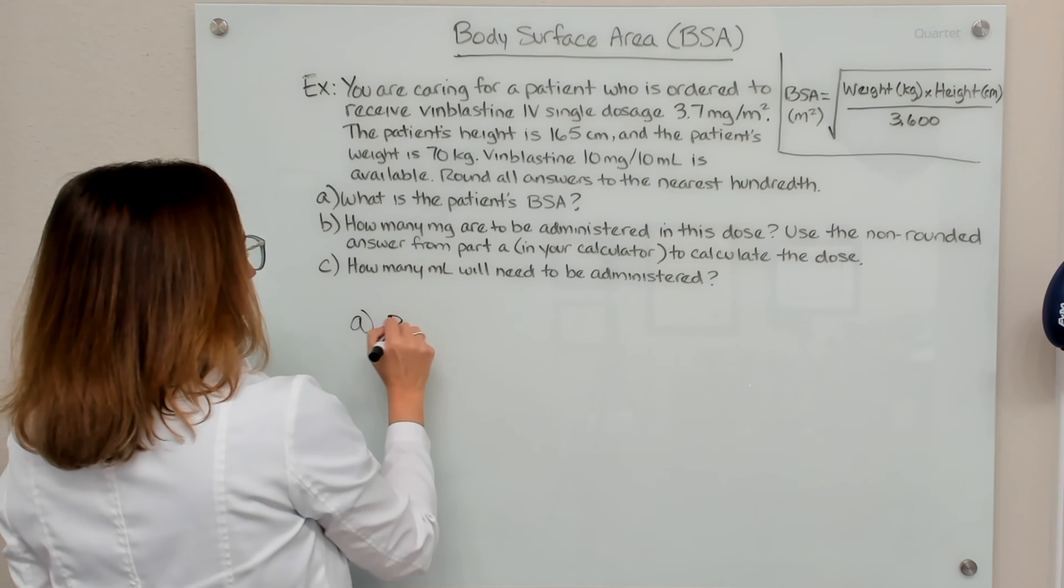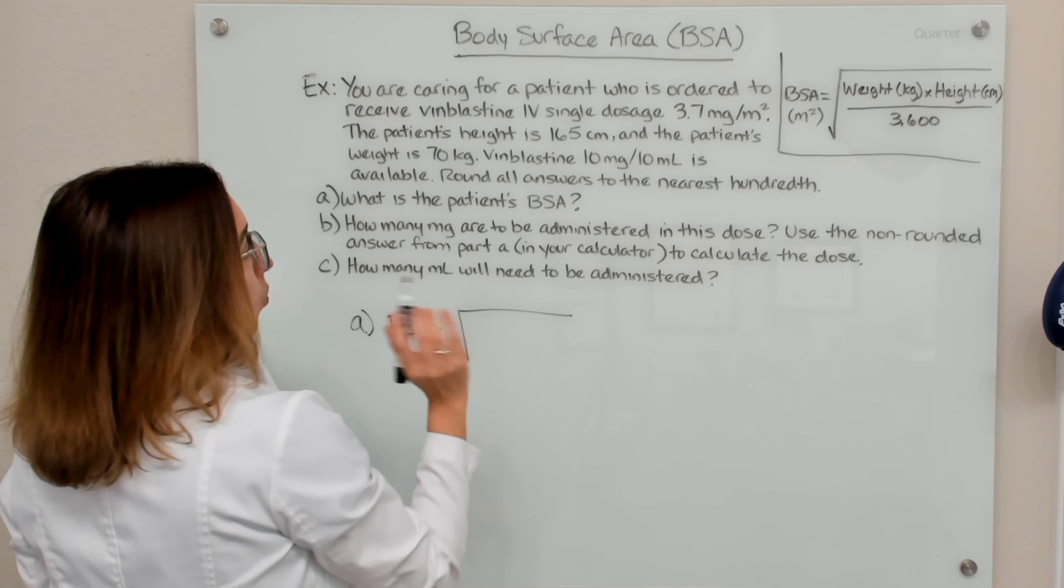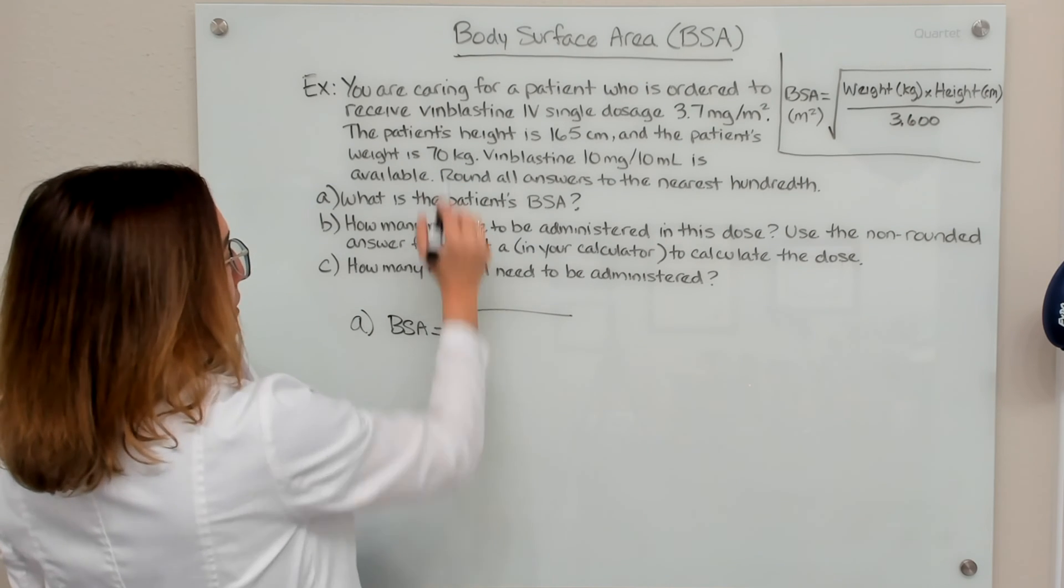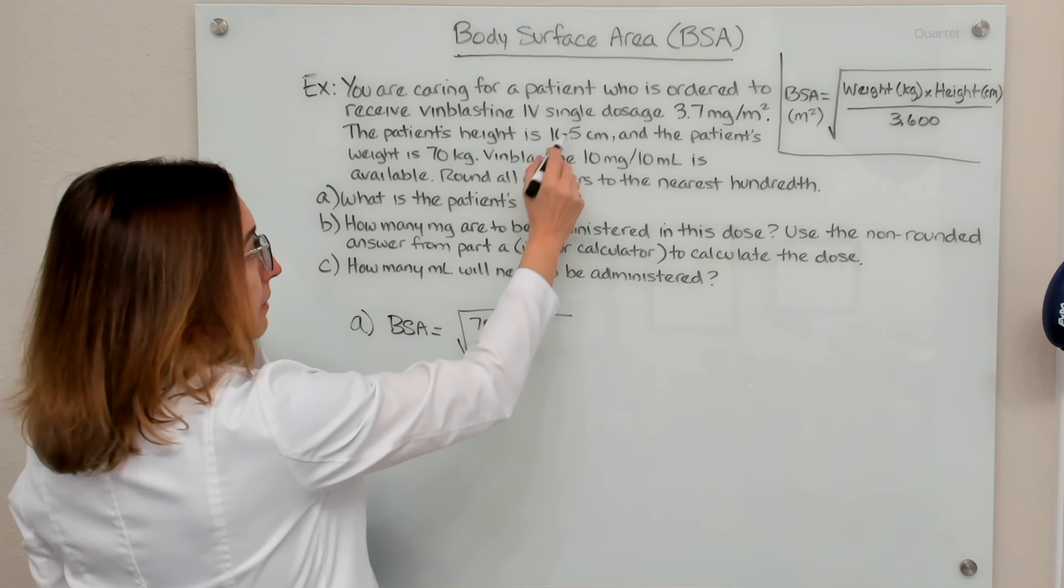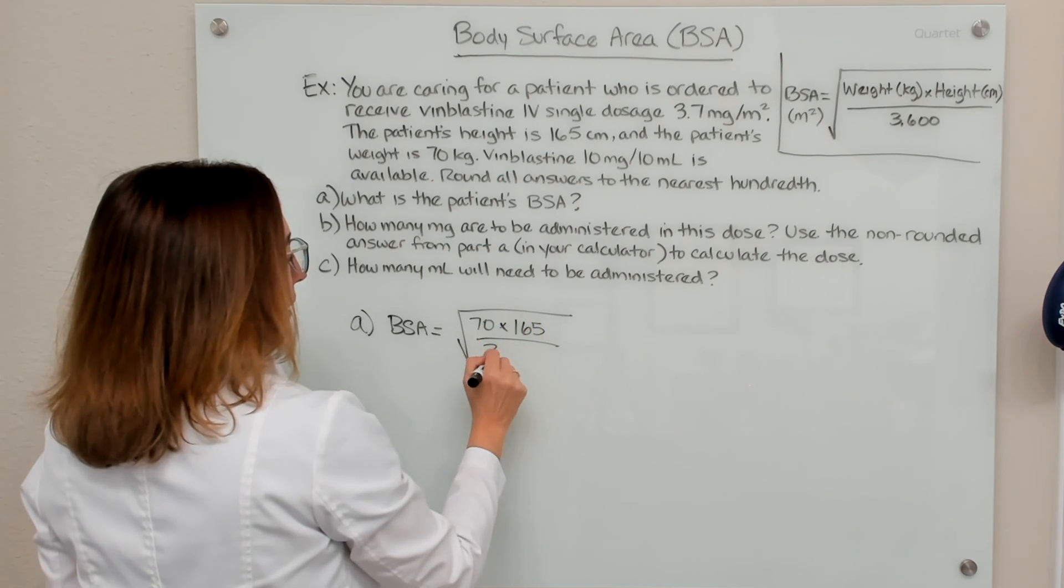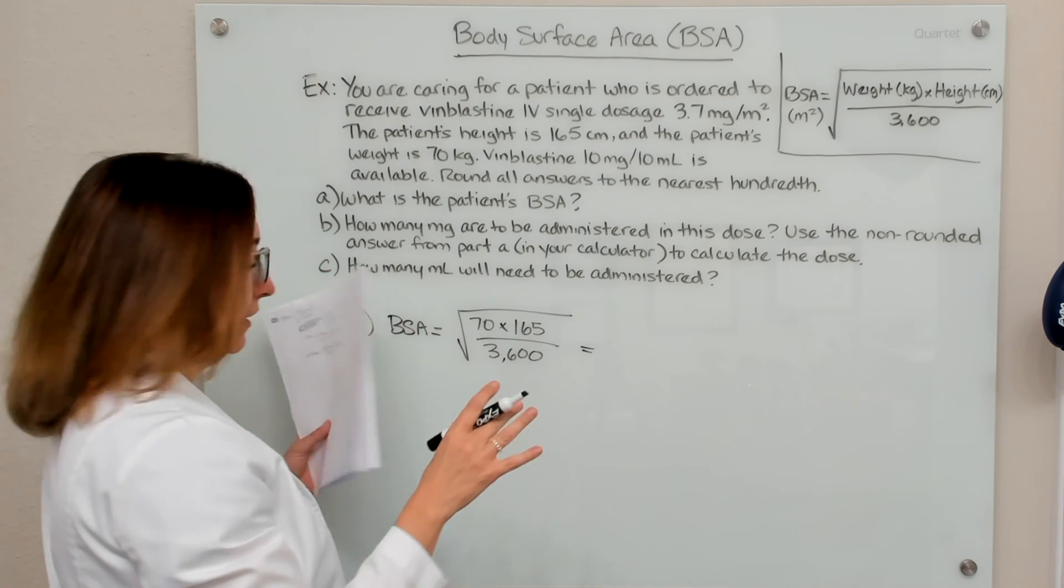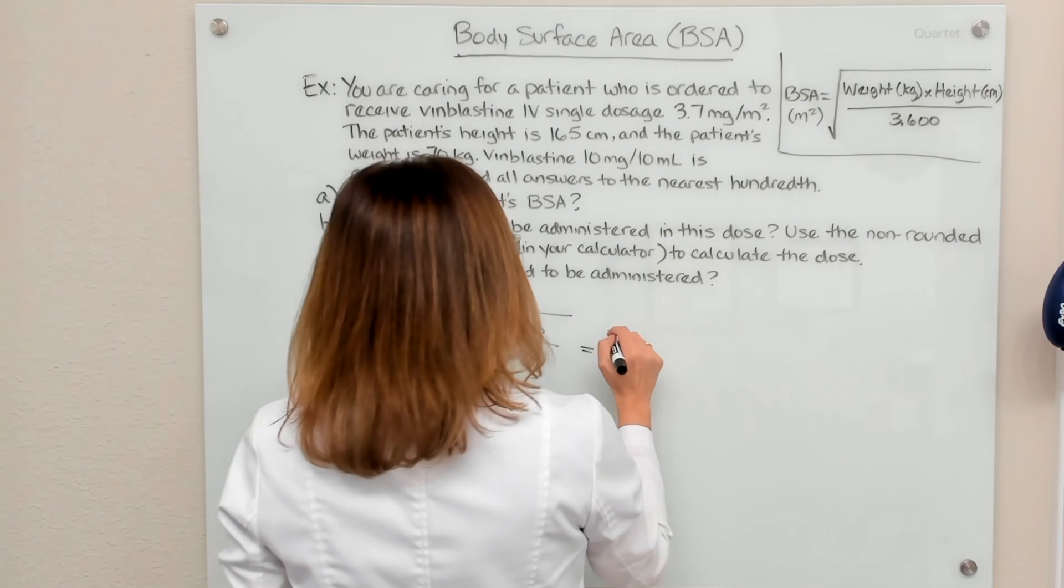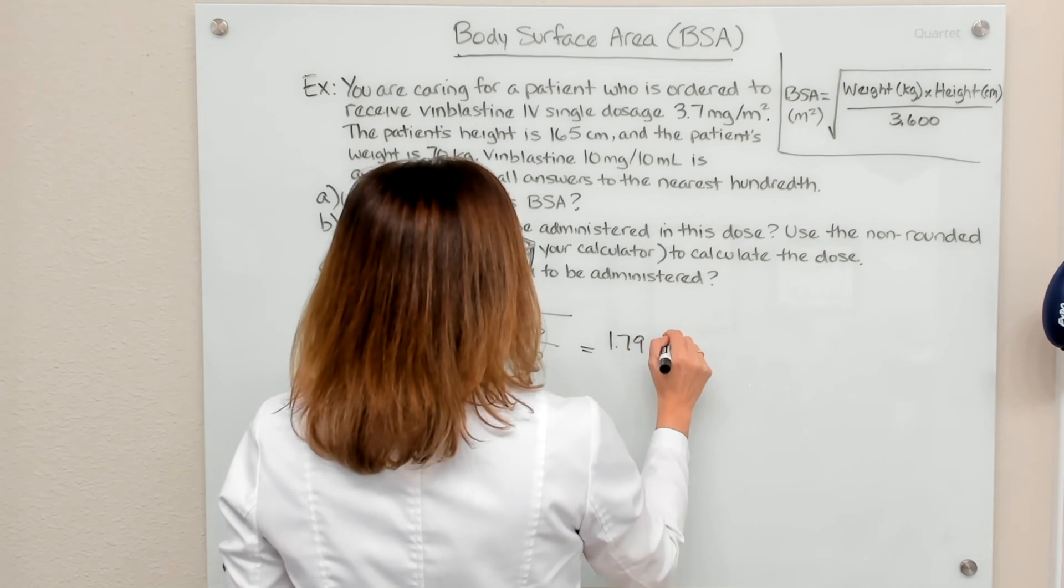So part A, BSA equals the patient's weight in kilograms, which is 70, times the patient's height in centimeters, which is 165 divided by 3600. So if you do this math in your calculator, then you should end up with 1.79 meters squared.